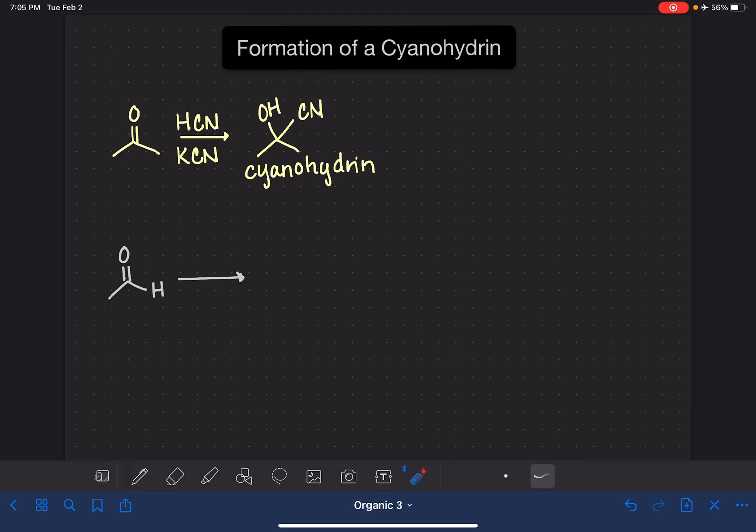With this reaction, whether you're using HCN or HCN plus KCN, the actual reactive species here is the cyanide ion. The cyanide ion attacks the carbonyl carbon and opens up the carbon oxygen double bond. In this first step, we form a bond between the carbonyl carbon and the cyanide group right there.